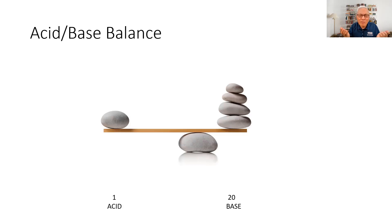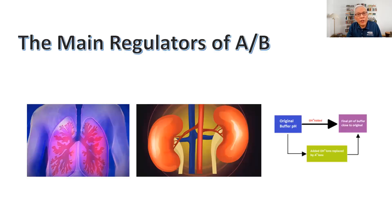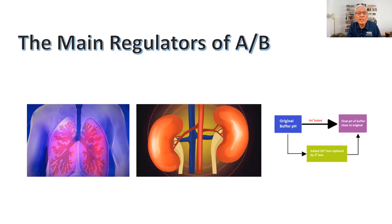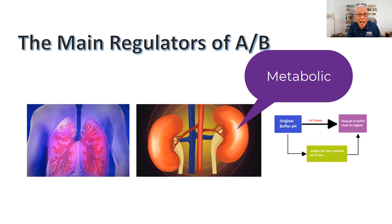When we have an acid-base balance, that means there is a balance of the ratio between acids and bases, and that ratio is usually 1 to 20. There are two major systems responsible for maintaining acids in the body: the respiratory system and the kidney, which we refer to in this discussion as the metabolic component of acid-base.